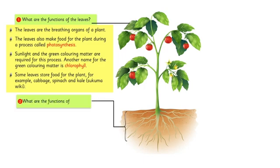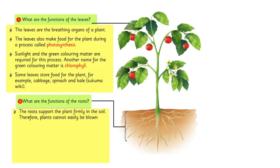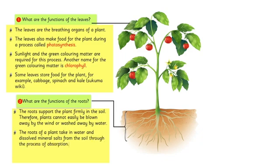What are the functions of the roots? The roots support the plant firmly in the soil. Therefore plants cannot easily be blown away by the wind or washed away by water. The roots of a plant take in water and dissolved mineral salts from the soil through the process of absorption. Some plants such as cassava, beetroot, and carrot store food in their roots.